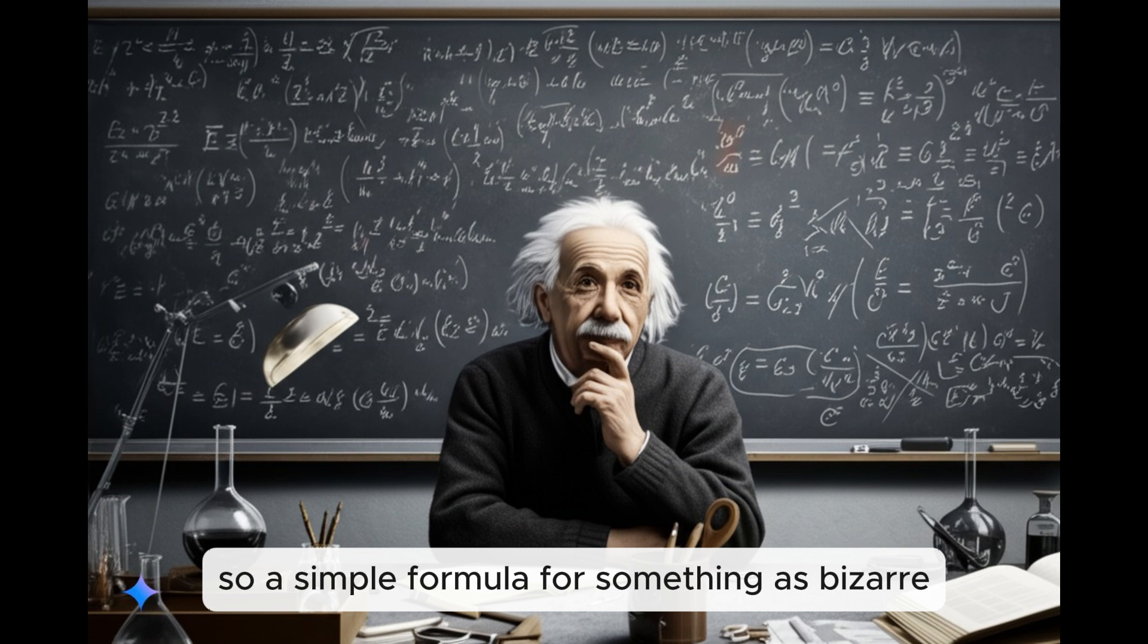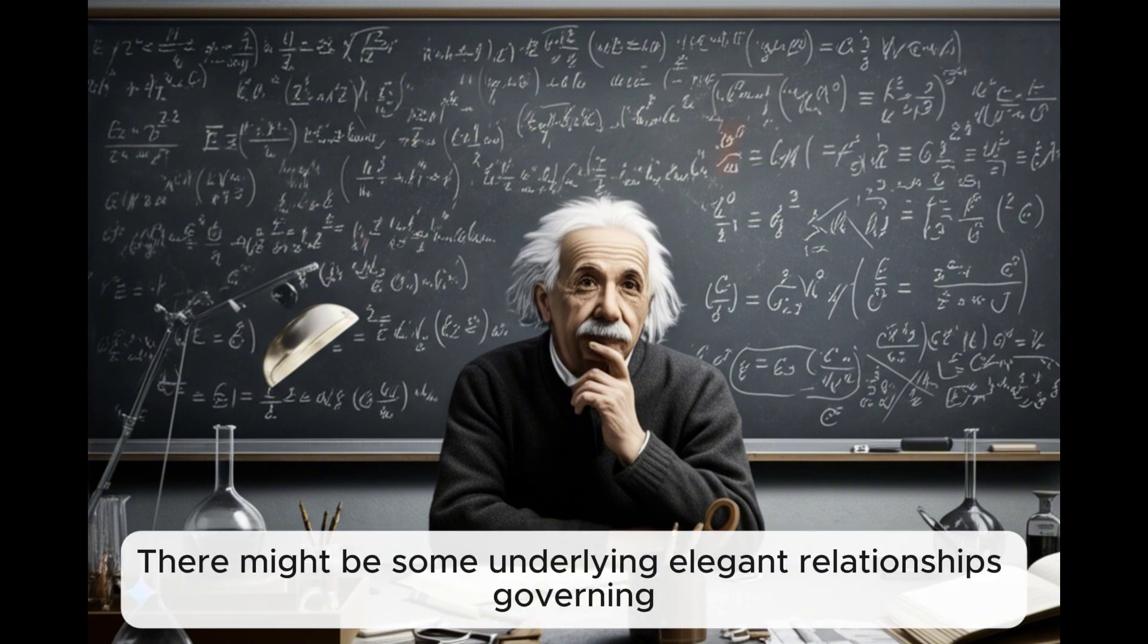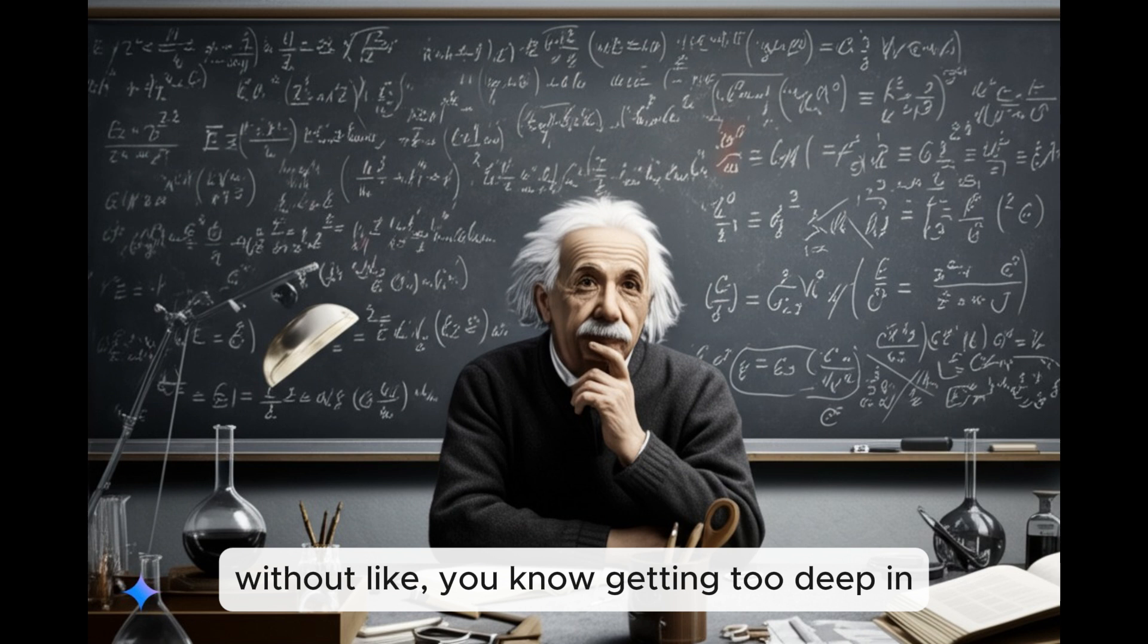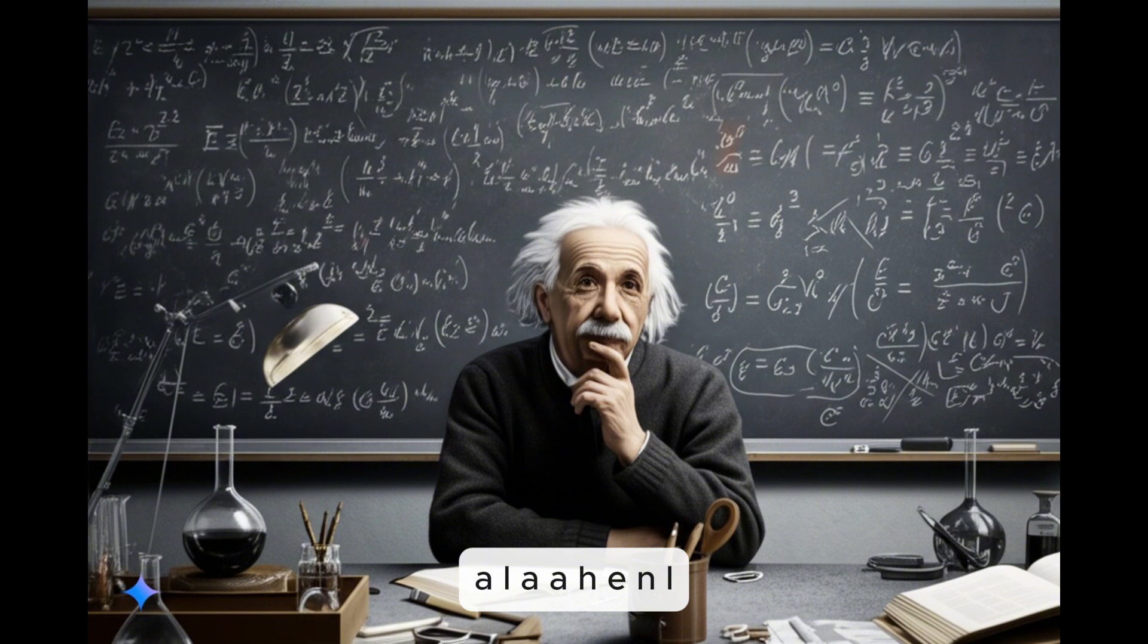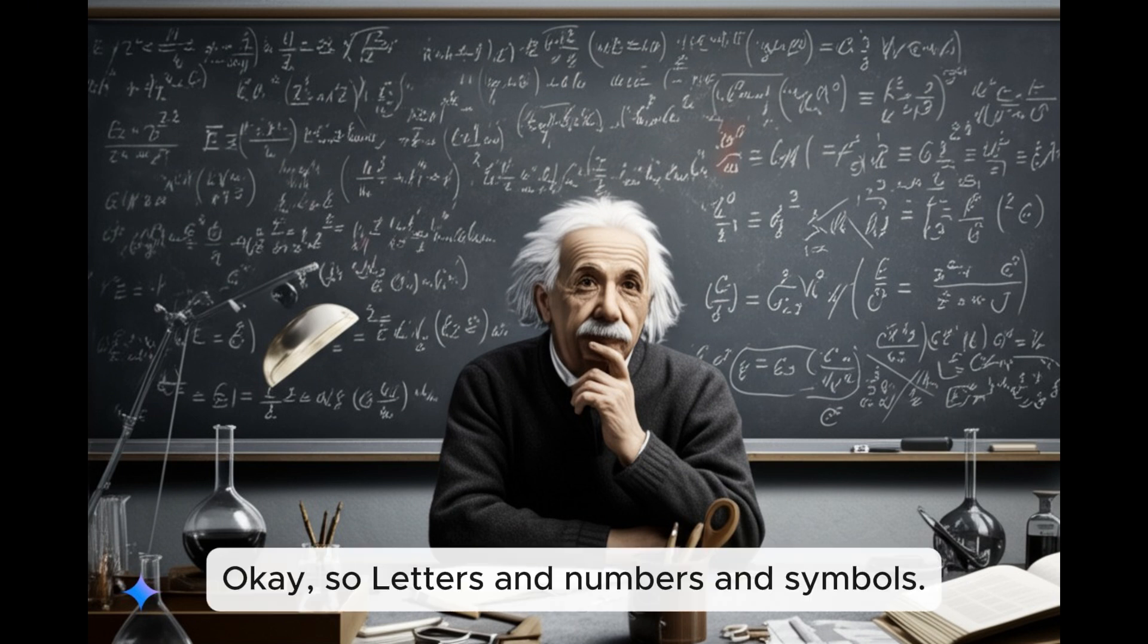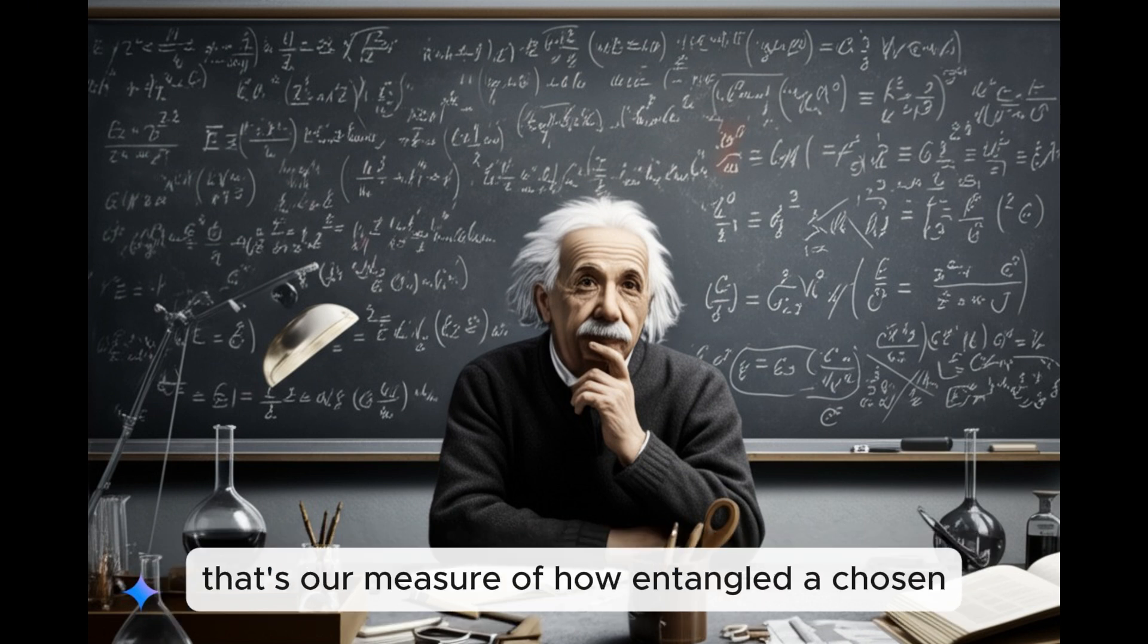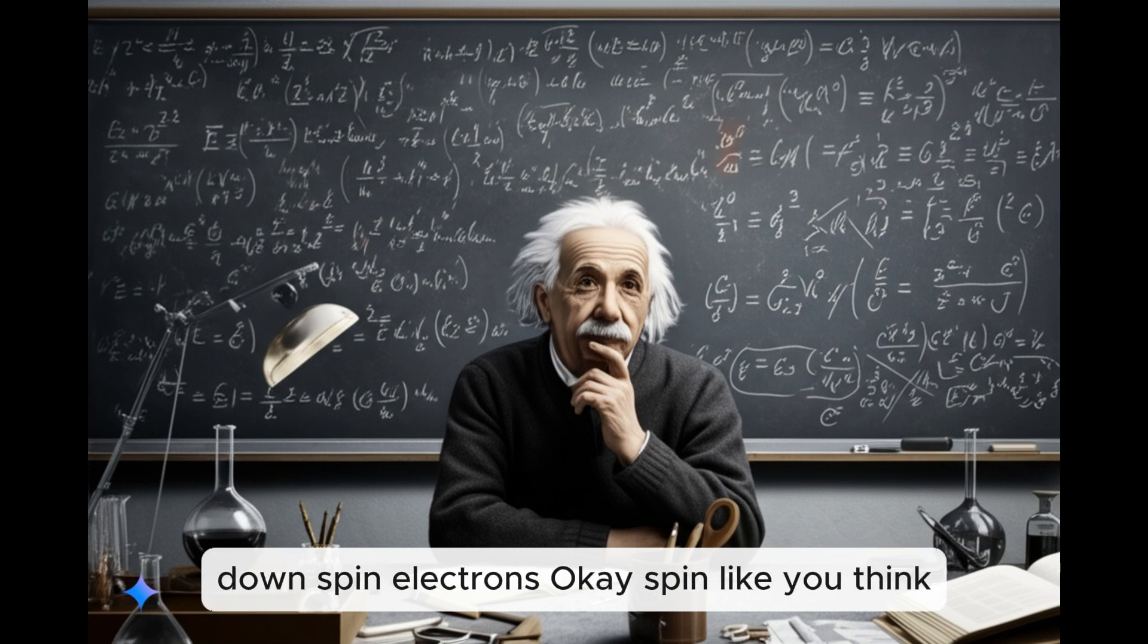But the really cool thing is what they called a pleasant surprise was that the formula they found for entanglement entropy was surprisingly simple. Wait. So a simple formula for something as bizarre as entanglement? Yeah, I know. It suggests that even within these really complex systems, there might be some underlying elegant relationships governing entanglement. That's pretty profound. Can you give us a sense of what this formula looks like? Well, it might look intimidating. But what it's basically saying is that the entanglement entropy, that's our measure of how entangled a chosen atom is with its surroundings,